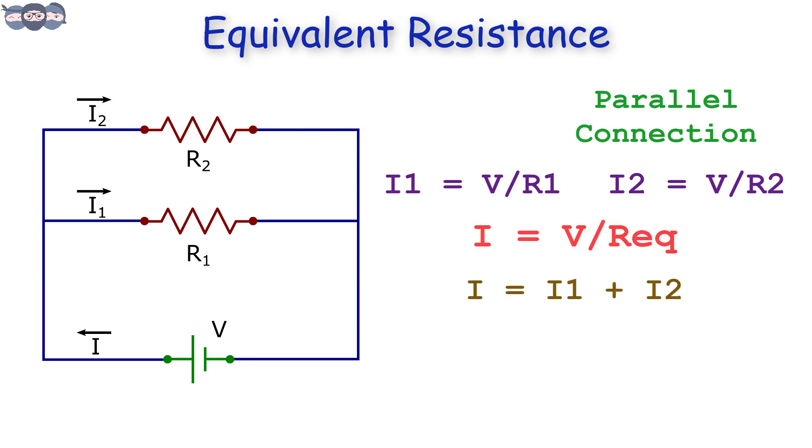We know that I equals I1 plus I2. This gives us 1 upon R eq equals 1 upon R1 plus 1 upon R2.